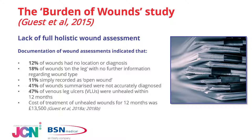41% of the wounds summarised were not accurately diagnosed, and 11% were simply recorded as an open wound. If we don't get a true diagnosis, how can we ensure a true, effective, and relevant treatment regime? For instance, a patient with a chronic venous leg ulcer — if it's classed as an open wound or a leg ulcer and the venous disease has not been diagnosed — then lack of compression therapy may occur, resulting in poor management and patient outcomes. The cost of healing unhealed wounds is significant, and 47% of venous leg ulcers are unhealed for as long as 12 months or even longer.